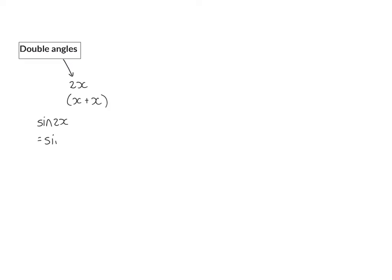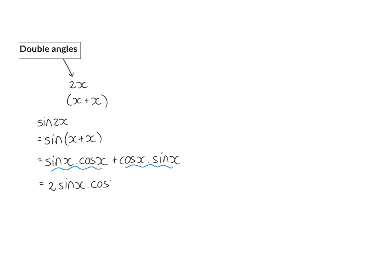we can rewrite sin of 2x as sin of x plus x. We can now use our compound angle identity to expand this to sin of the first angle multiplied by cos of the second angle, plus cos of the first angle multiplied by sin of the second angle. These two terms are like terms, so we can add them to get 2 sin x times cos x, which is the same as cos x times sin x.